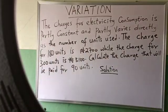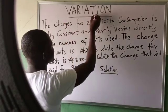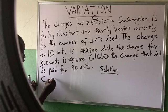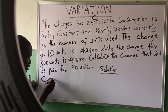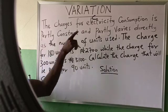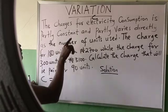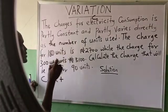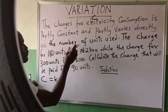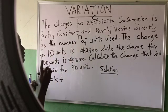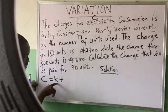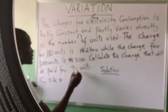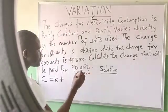We say the charges for electricity consumption — the charge C is partly constant and partly varies. Partly constant means C equals K, and partly varies directly as the number of units N. So we put plus, and since we already have one constant K, we need another constant for the direct variation part. Let the constants be K and P.